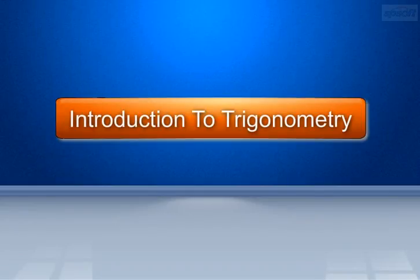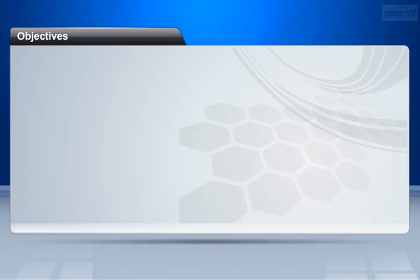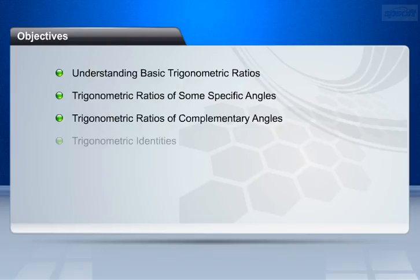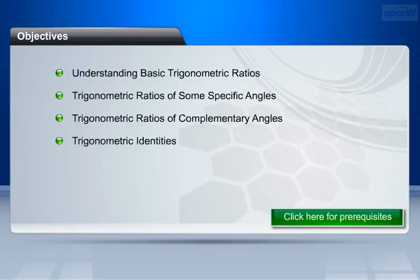Let us start our session about Introduction to Trigonometry. At the end of this chapter, you will be able to understand basic trigonometric ratios, trigonometric ratios of some specific angles, trigonometric ratios of complementary angles, and trigonometric identities.